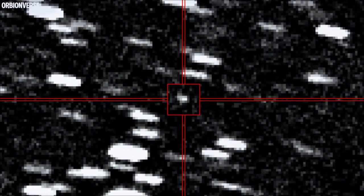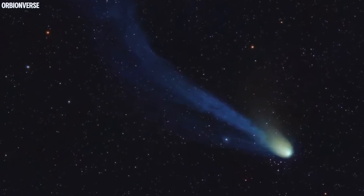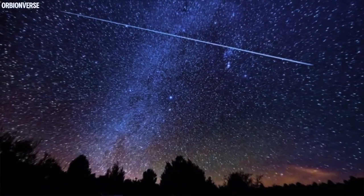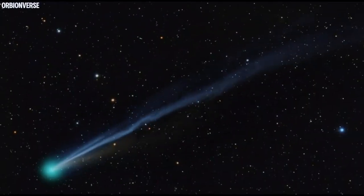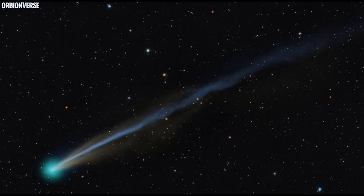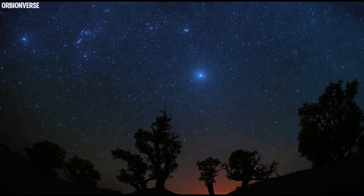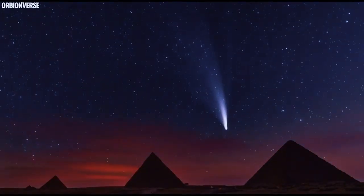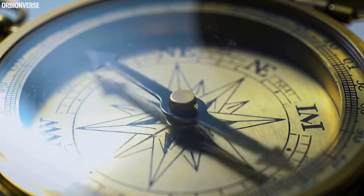Soon after, Comet Swan began to brighten unnaturally. Its brightness increased by a factor of 10 in a single night—something that usually takes weeks. Lemon followed, glowing intensely green, visible even to the naked eye under dark skies. At the same time, people around the world began noticing sky anomalies: aurora-like glows in regions far from the poles, faint magnetic disturbances, compass needles twitching without reason.